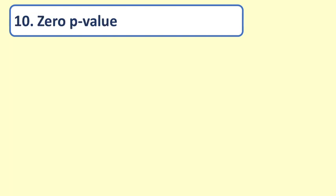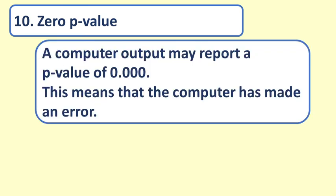Question 10. Zero p-value. Sometimes, a computer output will give the p-value as 0.000. This means that the computer has made an error.